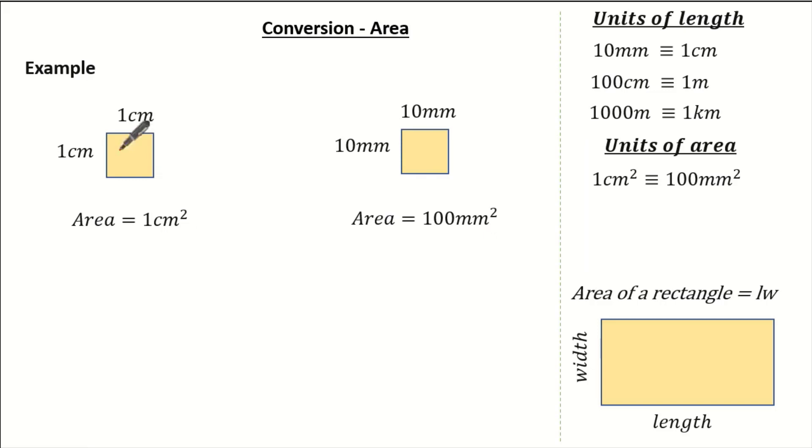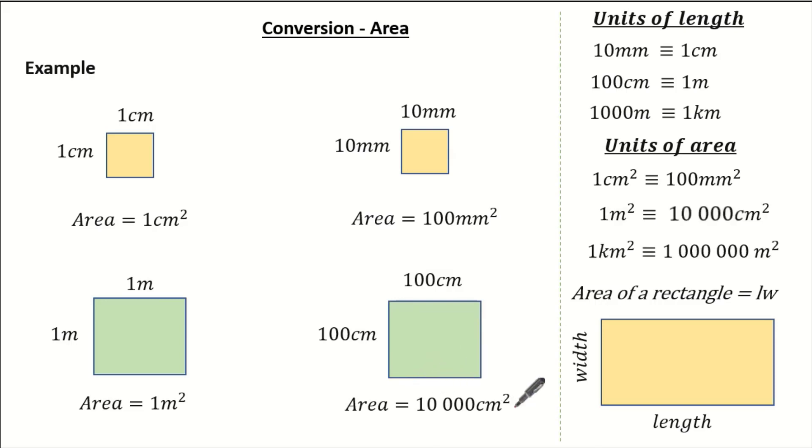So that means 1cm squared is exactly the same as 100mm squared. We can apply the same thing to meters. Looking at this square which is 1m by 1m, let's rewrite the exact same square but in centimeters. Well, it would be 100cm by 100cm.